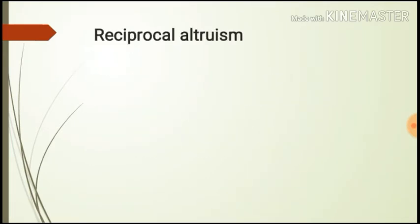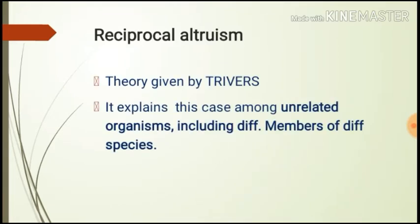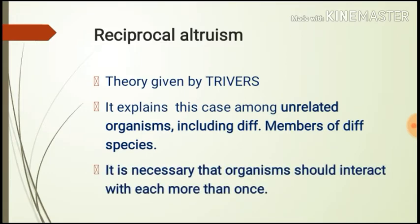Now let's see reciprocal altruism. This theory was given by Trivers and it explains altruistic cases among unrelated organisms, including different members of different species. One necessary condition is that the organisms must interact with each other more than once. For example, a baboon may help an unrelated companion in a fight, or a wolf may offer food to another wolf even though they share no kin.